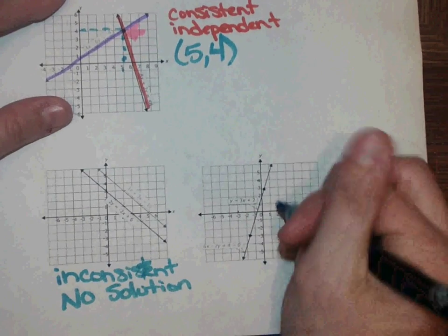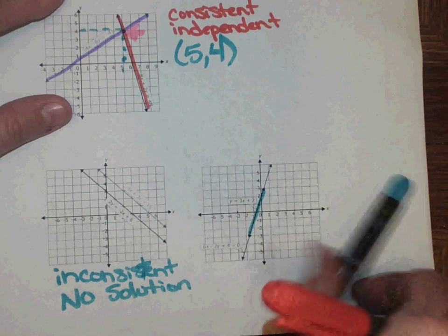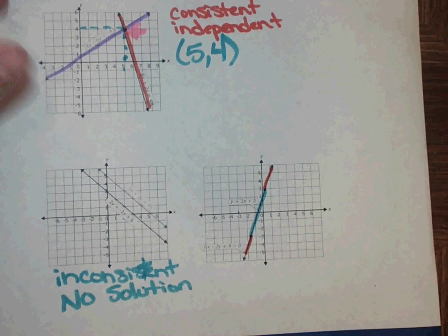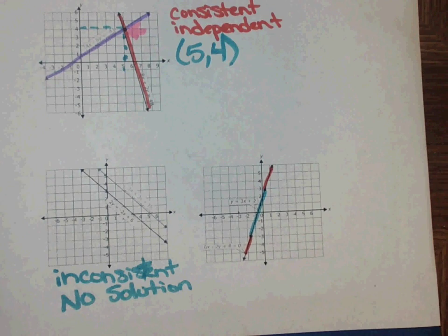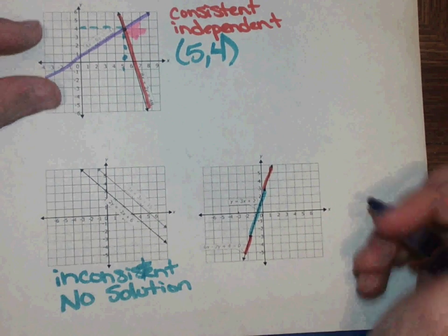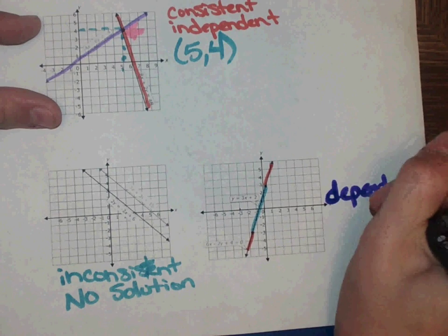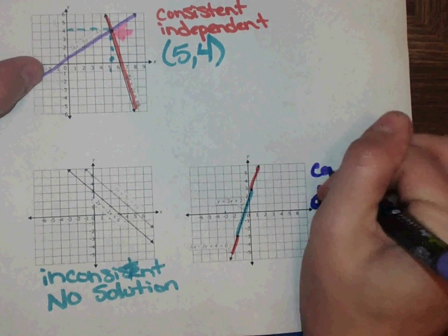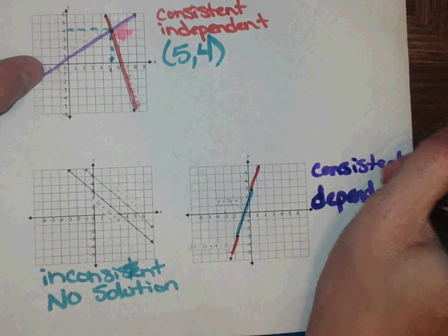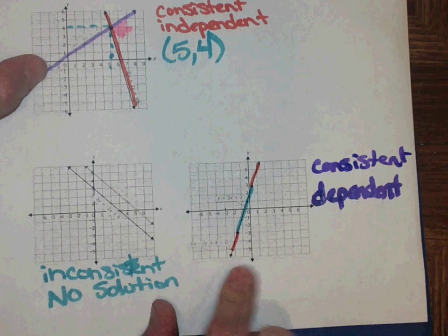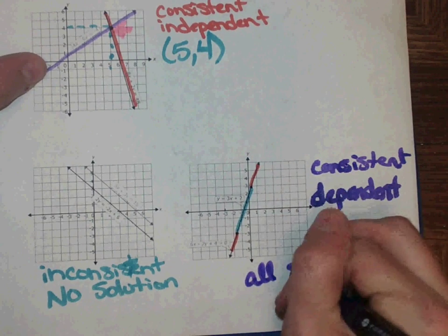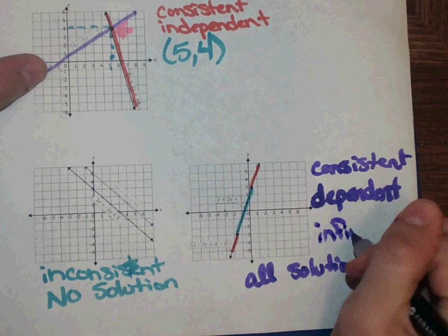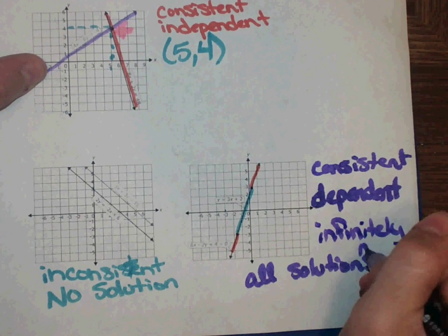And then last, we've got this line. You see a line here, but you also have this other line. It looks like one line is piggybacking the other. When they are piggyback like that, one is dependent on the other. And remember that if they do have a solution, it is consistent. And when they share all points, they share all solutions. That's the same as infinitely many.